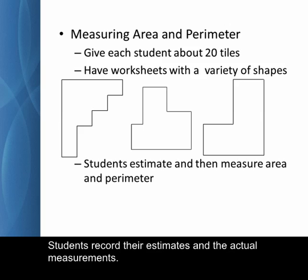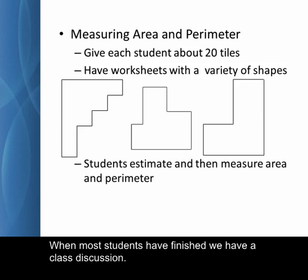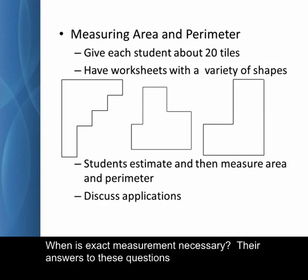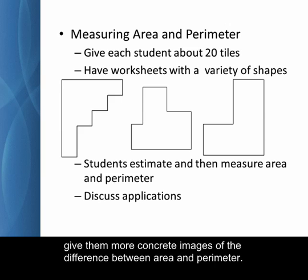Students record their estimates and the actual measurements. When most students have finished, we have a class discussion. When do you use area and perimeter in everyday life? When are estimates useful? When are estimates sufficient? When is exact measurement necessary? Their answers to these questions give them more concrete images of the difference between area and perimeter.